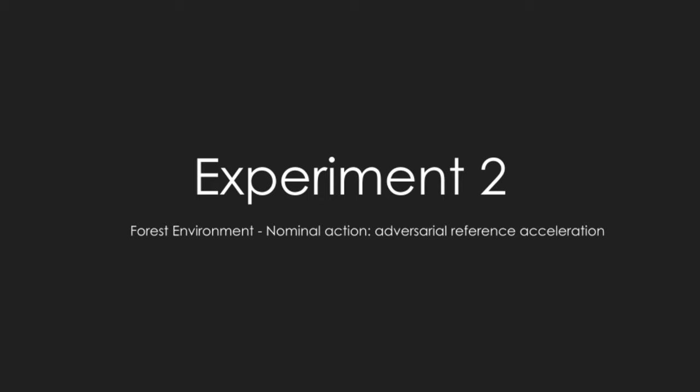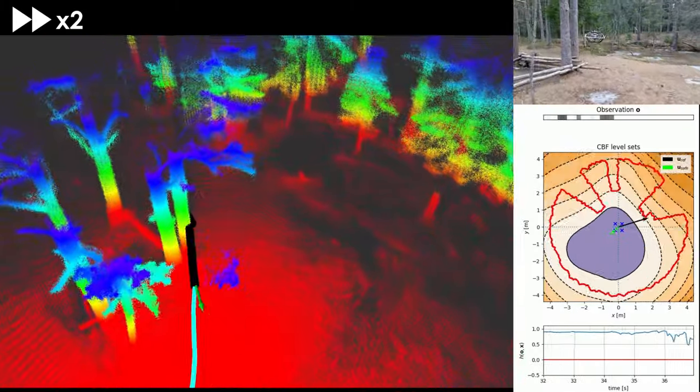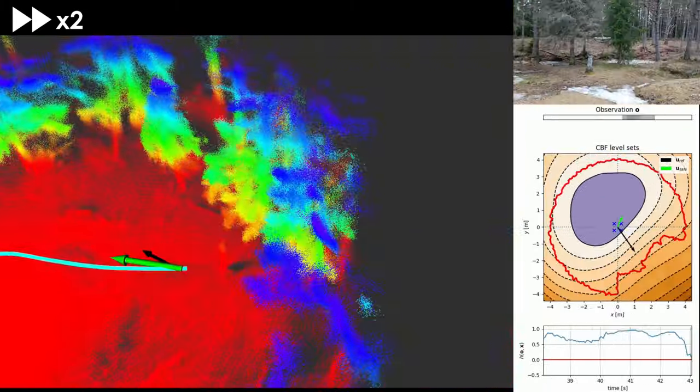In the second experiment, the robot receives adversarial reference inputs by a human operator, trying to drive it into tree trunks and foliage.